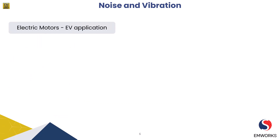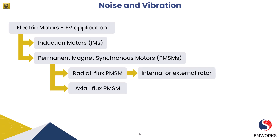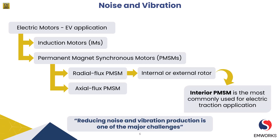For passenger electric vehicle applications, induction motors or permanent magnet synchronous motors (PMSM) are mostly employed. Among PMSM types we could have either a radial flux PMSM or axial flux PMSM. In radial flux PMSM, we could use either an internal rotor connected to the shaft, or an external rotor design used directly in an in-wheel configuration. Interior PMSM is the most commonly used for electric vehicle applications, and reducing noise and vibration production is one of the major challenges we are going to discuss through the effect of eccentricity.